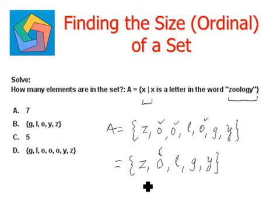Now we count the number of elements: 1, 2, 3, 4, 5. So we have 5 elements in the set A, which is the size of the set. Therefore, option C matches the answer that we got.